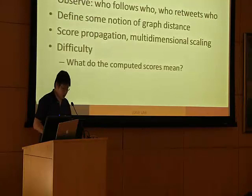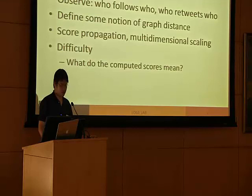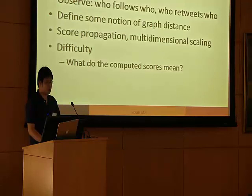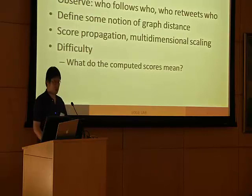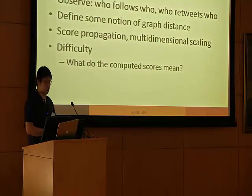Before going into the specifics of our approach, we survey some of the existing approaches. There are mainly two approaches. The first is graph-based: you observe something, for example who follows who on Twitter or who retweets who, and then define some notion of pairwise distance between users to build a graph. Given this graph, we do score propagation — we have some people with known political positions, like the presidential candidates themselves, and propagate scores along the graph to give everyone a score.